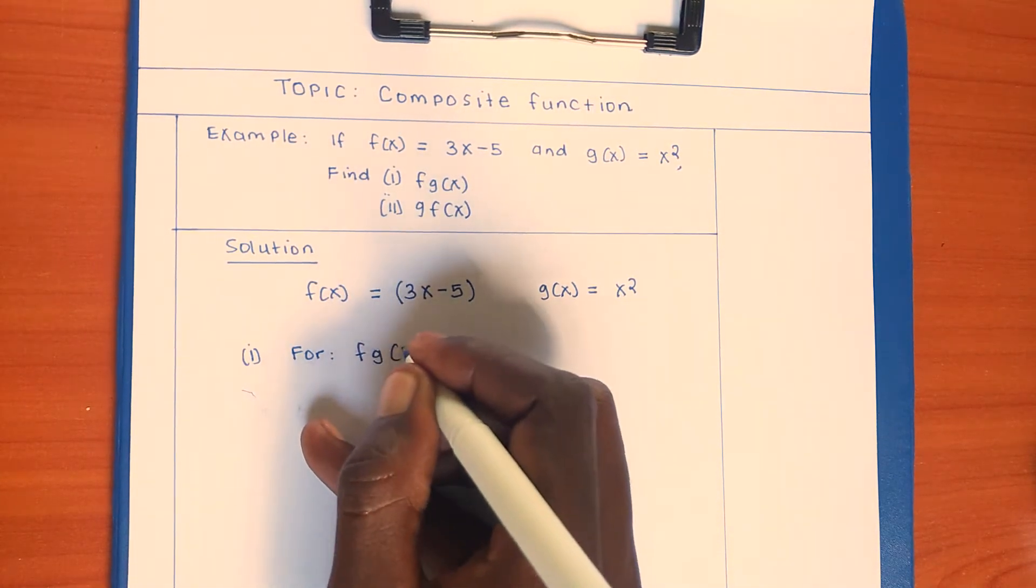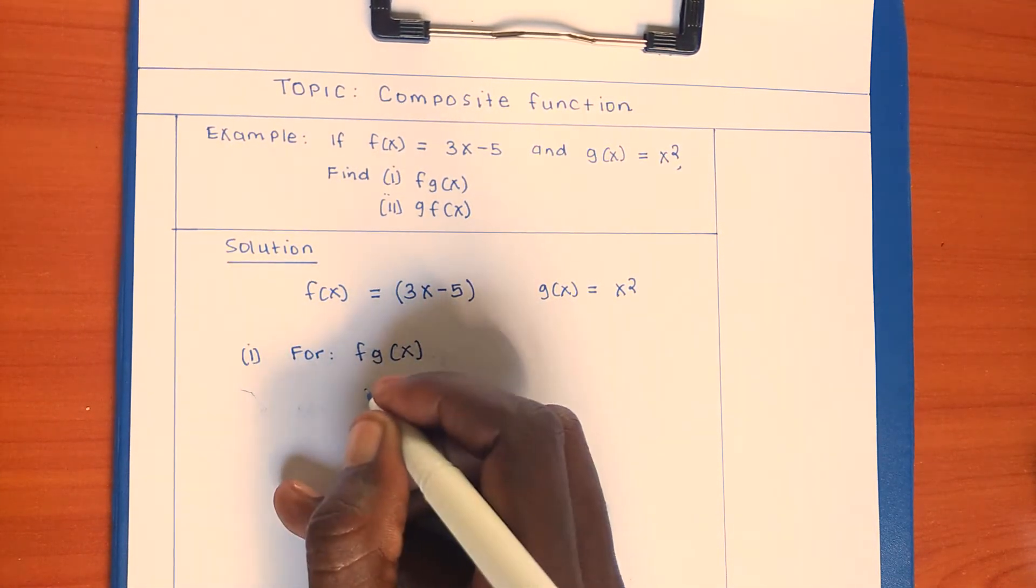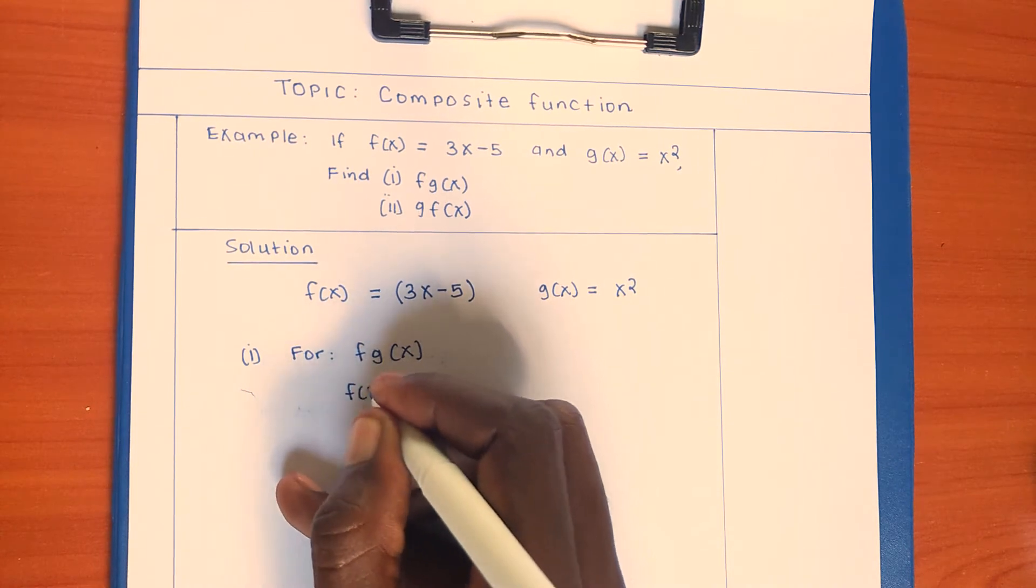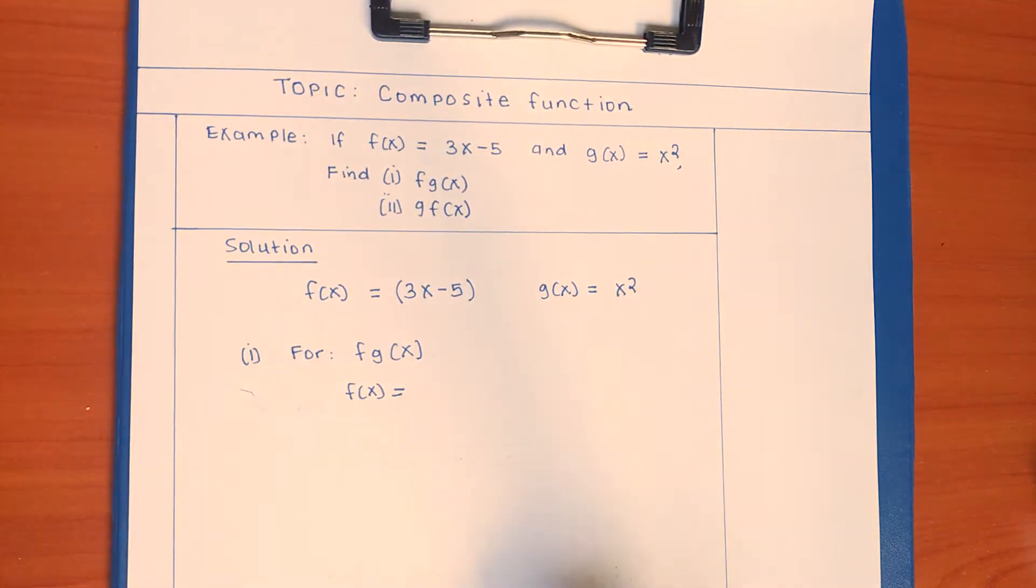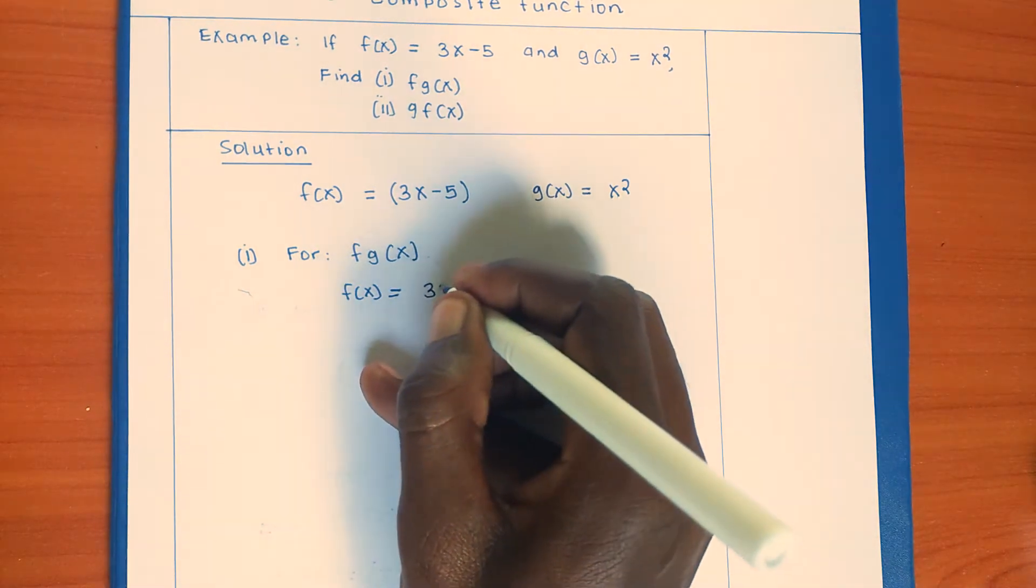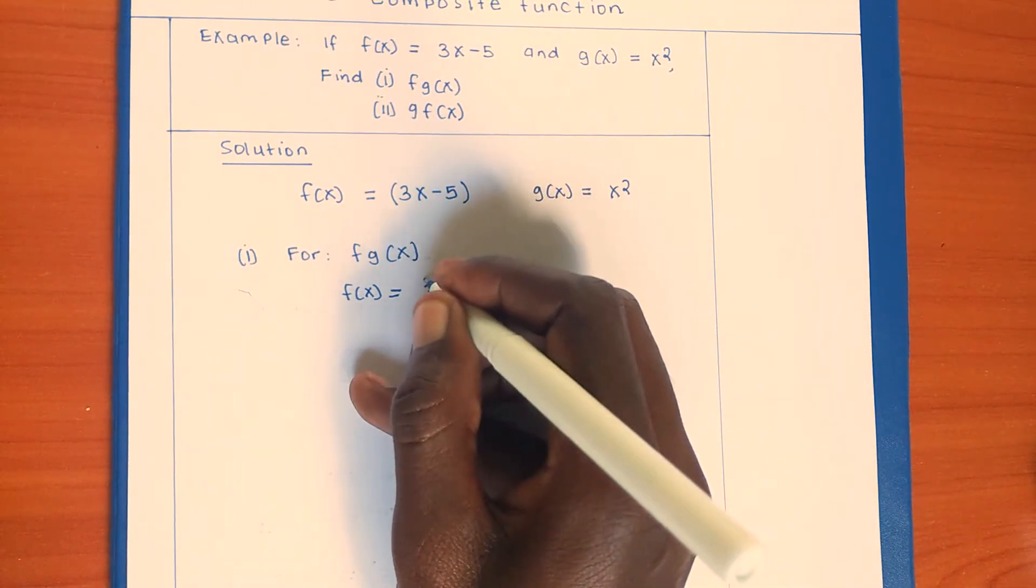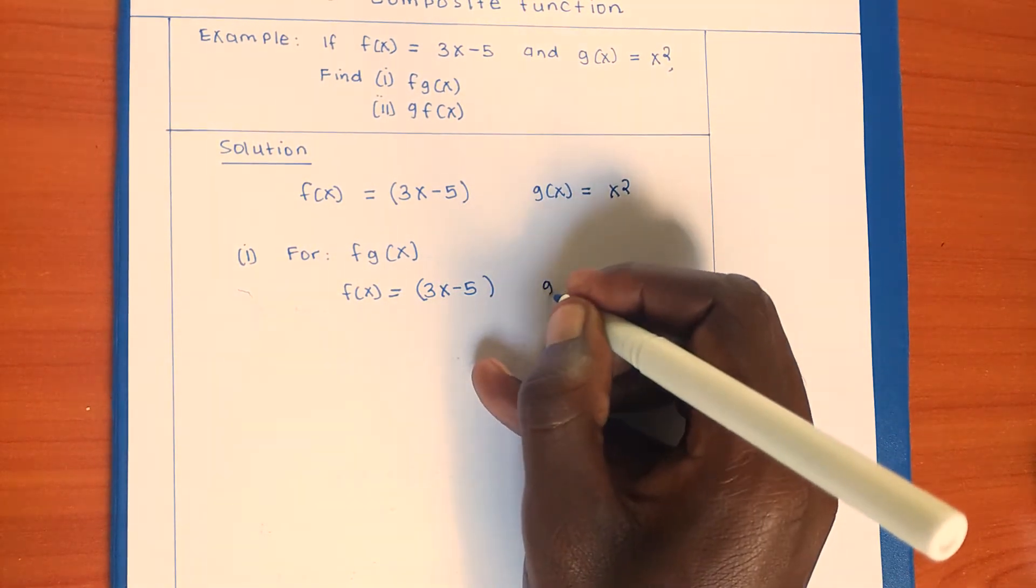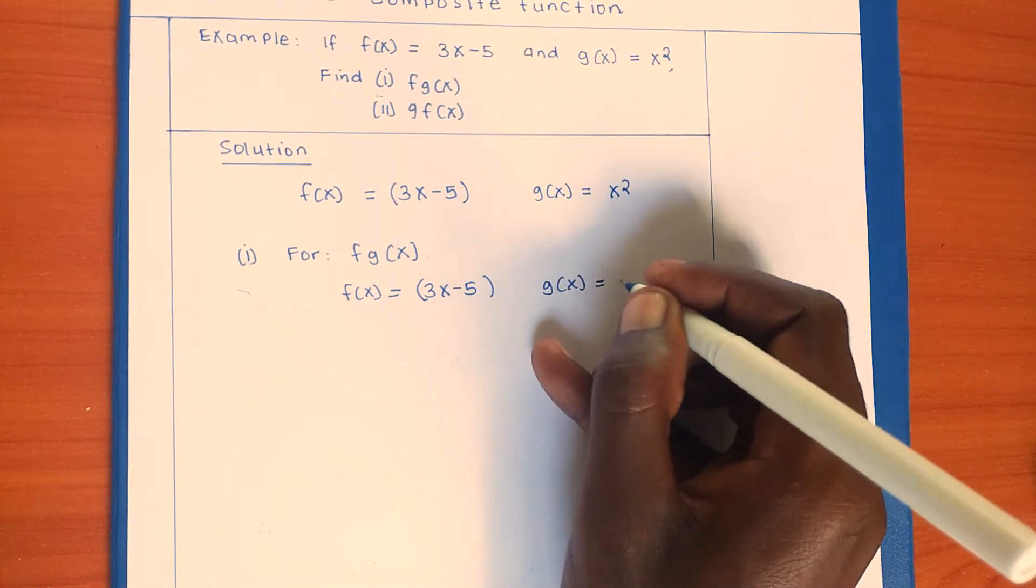For fg(x), we shall have f(x) which is equal to 3x - 5, and g(x) which is equal to x².